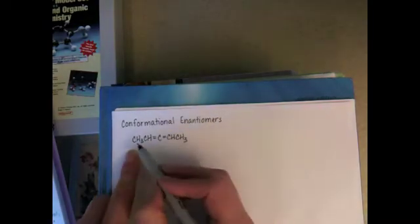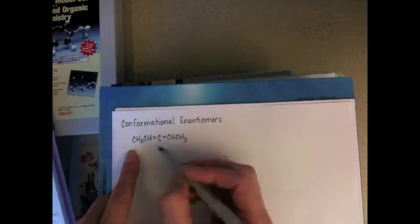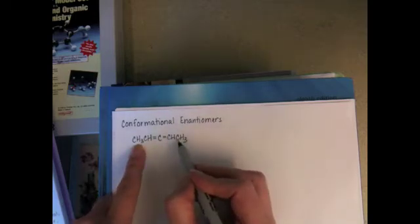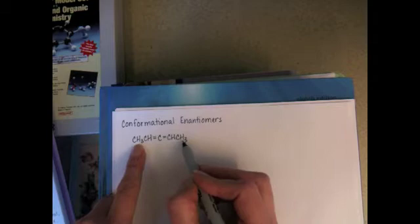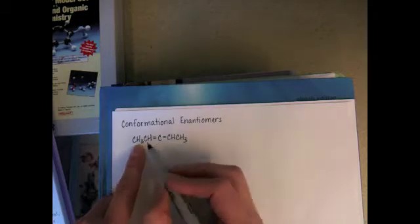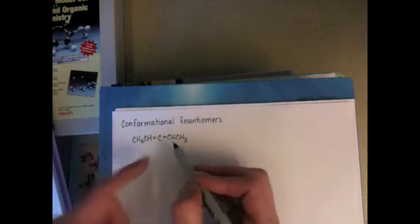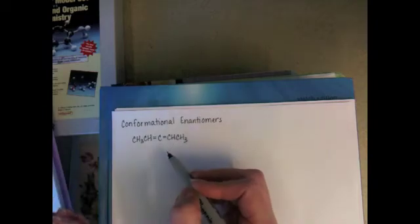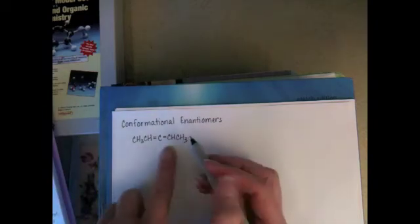The molecule has no chiral carbons in it at all. The two carbons on the end, they are tetrahedral, but each of them have three hydrogens attached, so they can't be stereocenters. The other three carbons in the molecule, they don't have four things attached to them, so they're just not even eligible to be stereocenters.